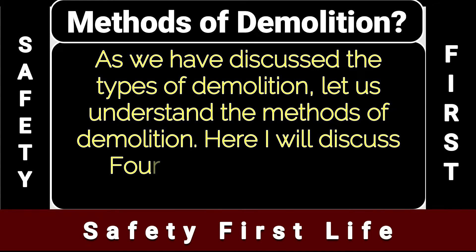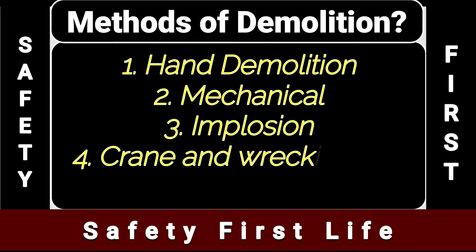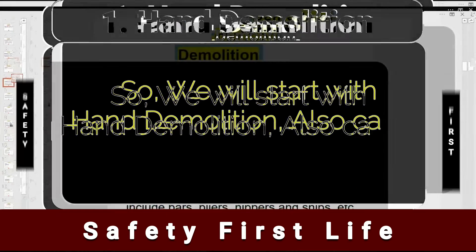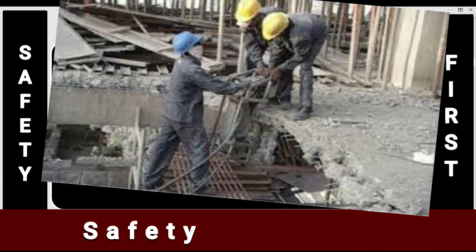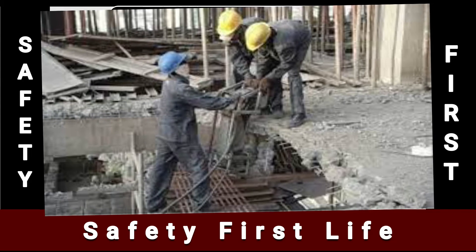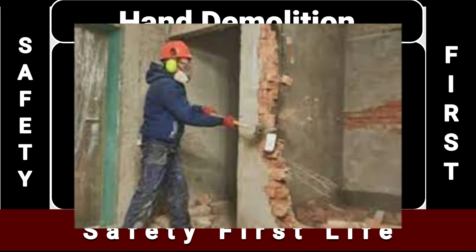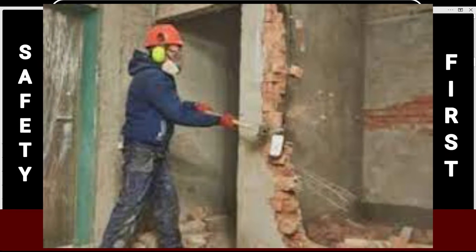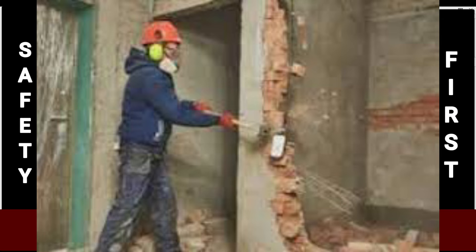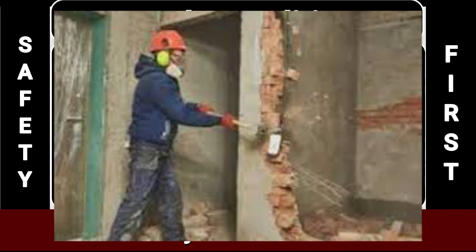I'll discuss four major methods of demolition: number one, hand demolition; number two, mechanical; number three, implosion; and number four, crane and wrecking ball demolition. Hand demolition is also known as green demolition. Deconstruction is the process of manually stripping and deconstructing the house piece by piece with the intent of salvaging as many materials as possible. Power tools required include a reciprocating saw, circular saw, rotary jackhammers, cordless drill, angle grinder, and air cleaner. Hand tools may include bars, pliers, nippers, and snips.